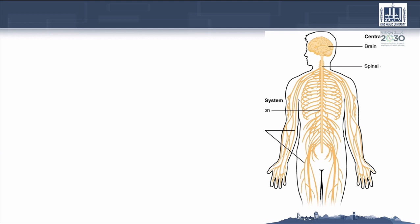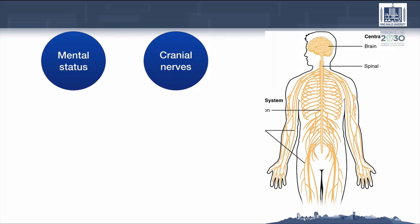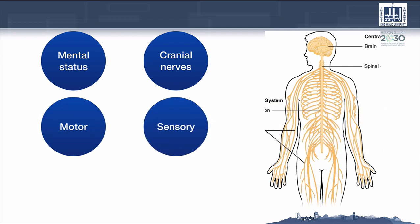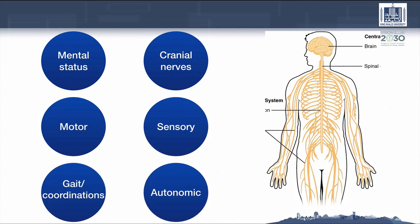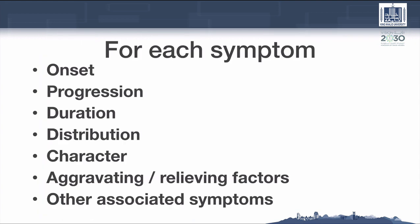You can divide the nervous system into smaller systems: mental status, cranial nerves, motor and sensory, gait coordination, and autonomic. Remember, this is not a physical examination skill — this is history taking. You can use this distribution for history taking and it will really help you. For each symptom you should know the onset, progression, duration, distribution, character, what aggravates or relieves it, and any associated symptoms.